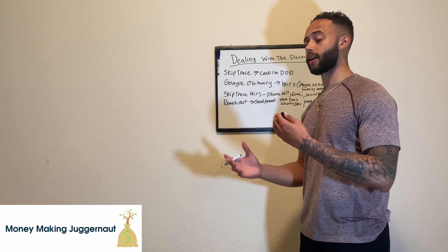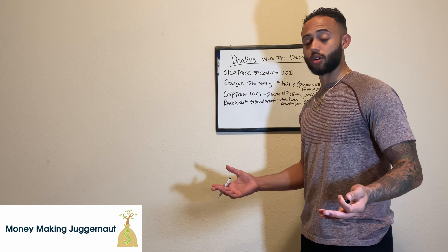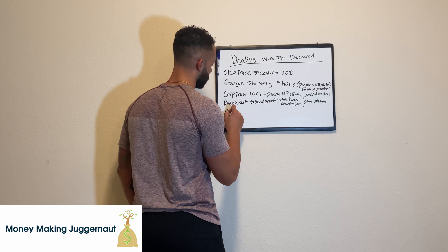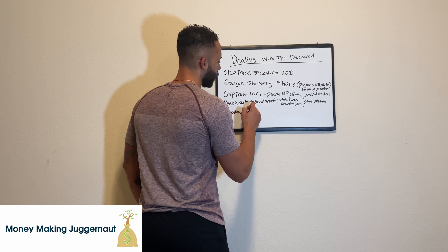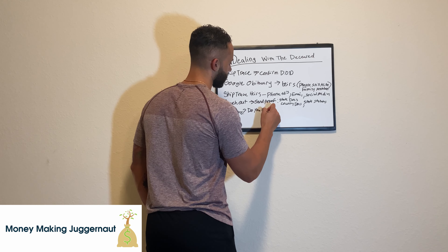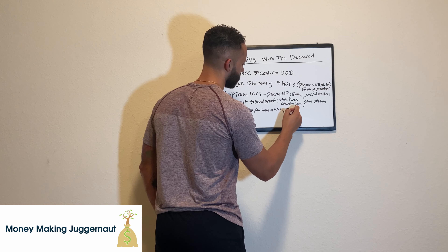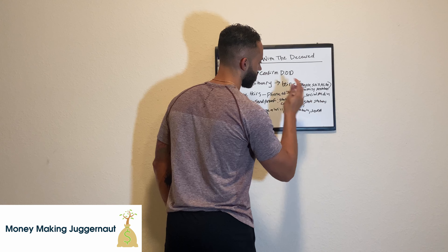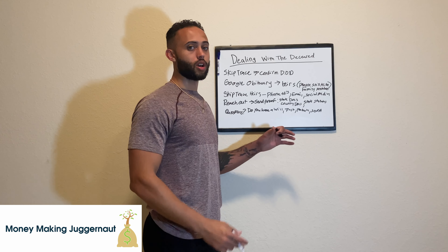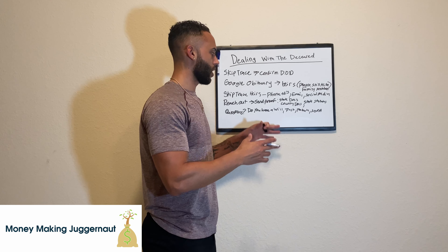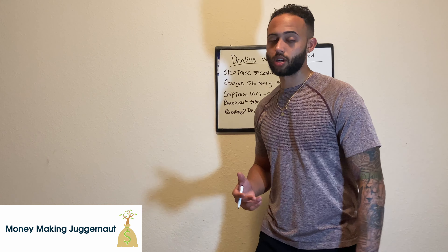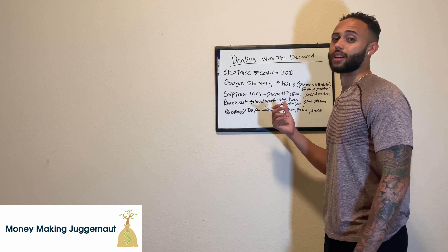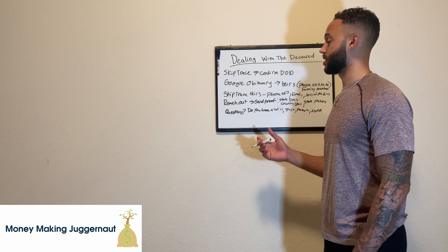Once you have them understanding what's going on and they're comfortable, you've got to ask some questions. The main questions you need to ask are: do you have a will, a trust, probate, or a summary of administration? These are documents that can be used to support your claim when you're going after these funds. Most of the time, when you're filing a motion with the county or submitting something through the state, they're going to need some sort of proof so they can determine that these heirs are entitled to these funds from the person who is deceased.